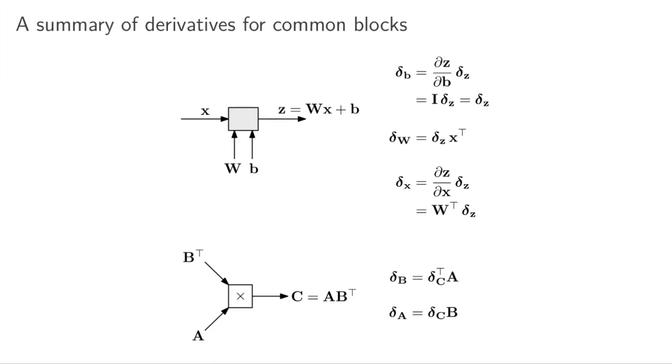We've seen a few of the common blocks that are used in neural networks now. What I wanted to do here is basically summarize the derivatives which you need to get these error signals or accumulators for two very common blocks that we see in neural networks.